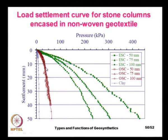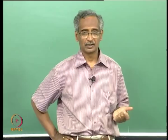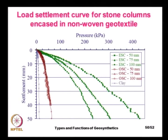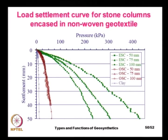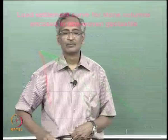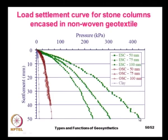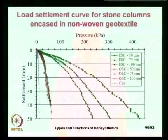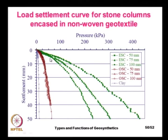When the same stone columns were encased in a geotextile, the performance improved dramatically. For a 50 mm diameter column encased in a nonwoven geotextile with tensile strength of only about 20 to 25 kN/m, a compressive pressure of nearly 400 kPa could be applied. Compared to unreinforced soft clay failing at 15 kPa and ordinary stone columns reaching only 50 kPa, this is a dramatic improvement.